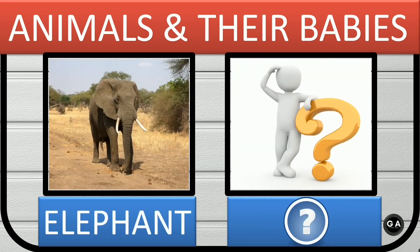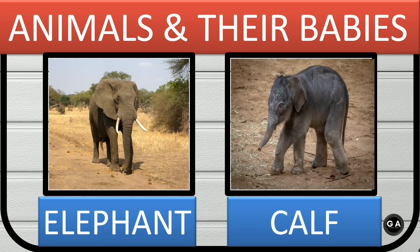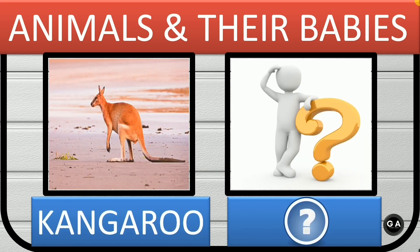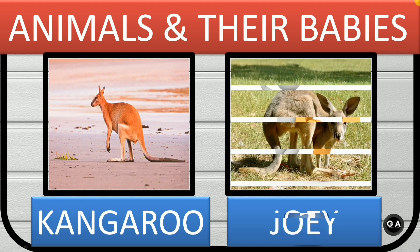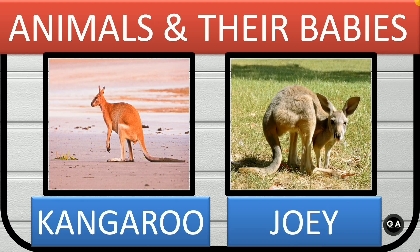Elephant. Elephant's baby is calf. Kangaroo. Kangaroo's baby is joey.